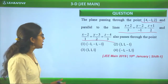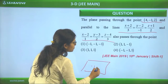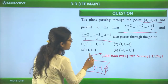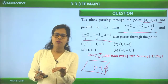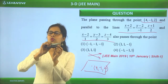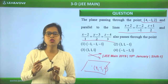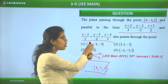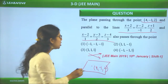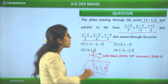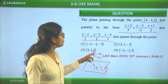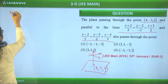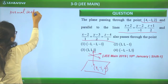We have to find the plane's equation. The point is (4, -1, 2) and the plane is parallel to two given lines. If a plane is parallel to a line, then the plane's normal vector will be perpendicular to the direction of that line. So the normal vector of the plane will be in the direction of the cross product of the two line direction vectors.